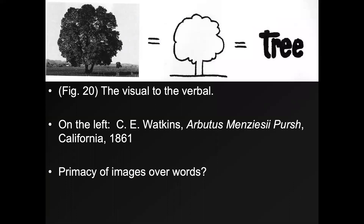Most people believe there is a primacy of images over words. If you show someone a realistic drawing of a tree — anywhere in the world, in places where trees exist — they'll recognize it as a tree. Even a simple line drawing works. But if you just show the written word 'tree' in English, several billion people who don't read English won't know what it is. Images can communicate more clearly, even when relatively simplistic.